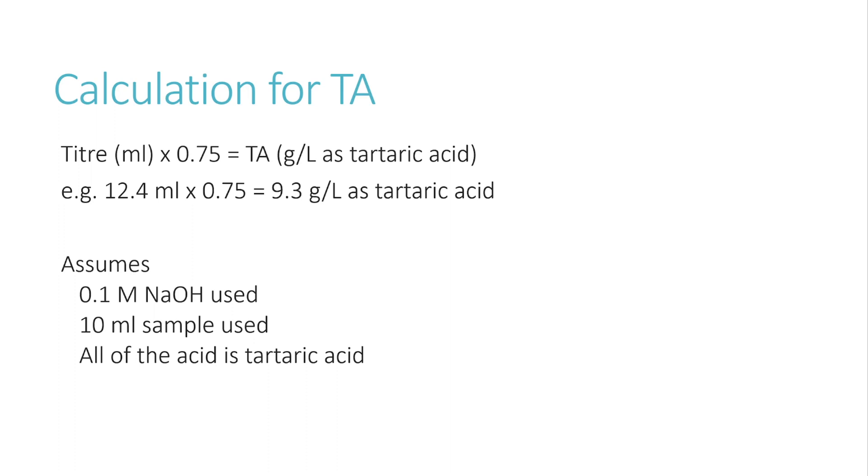While tartaric acid is the main acid that we see in wine, we know that it's not actually the only type of acid in wine. We've got malic acid, lactic acid, citric acid. But as we can't differentiate between these, and tartaric is the most dominant acid, we have to assume all of it is tartaric acid for the sake of this calculation.